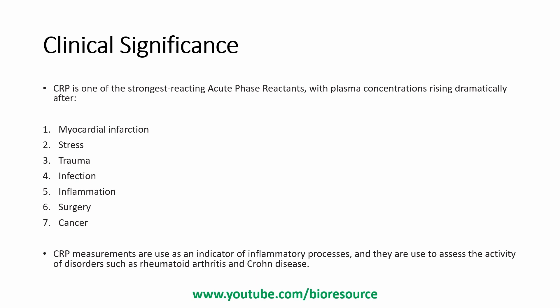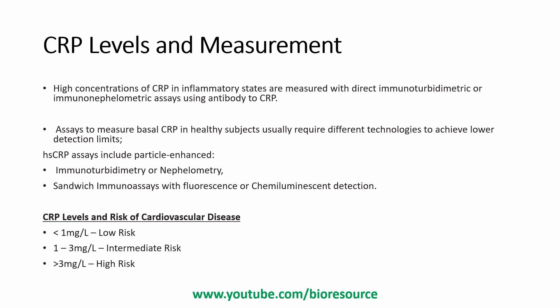CRP also helps to clear tissue debris from damaged tissue. CRP is one of the strongest reacting acute phase reactants, with plasma concentration rising dramatically after myocardial infarction, stress, trauma, infection, inflammation, surgery, and cancer. CRP measurements are used as an indicator of inflammatory processes and to assess the activity of disorders such as rheumatoid arthritis and Crohn's disease. It is not very specific to a certain condition but it is very sensitive — elevated CRP indicates some kind of inflammation in the body.